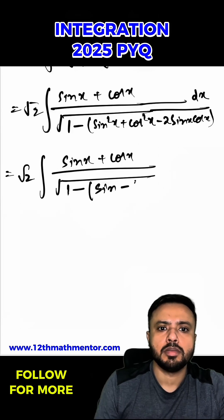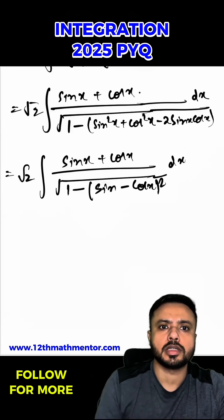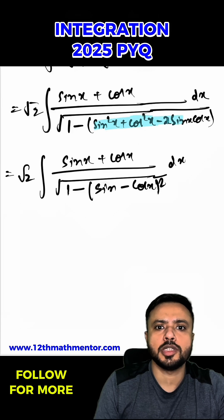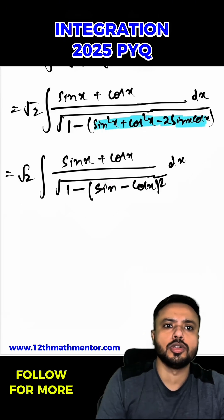So I can write it as √2(sin x + cos x) upon √(1 - (sin x - cos x)²) dx. Here you can clearly see this is a² + b² - 2ab, so I have written it as (a - b)².